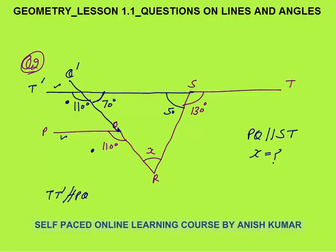Similarly, this complete angle is 180 on a straight line, so this would be 50. In the triangle, the sum of all three angles is 180: 70 plus 50 plus this angle gives 60 degrees, which is your final answer.